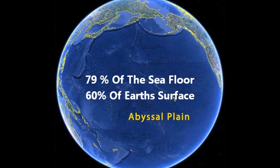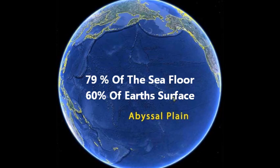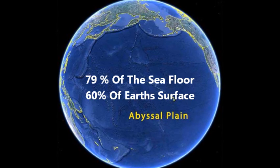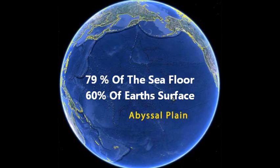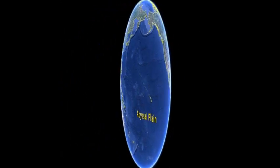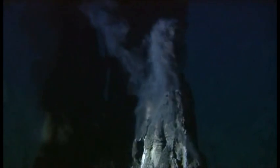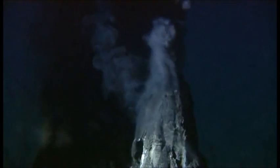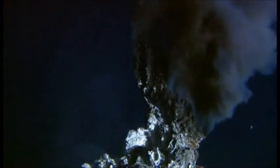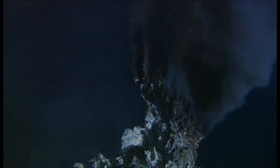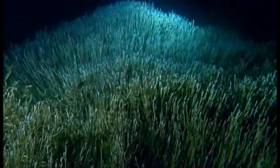It covers about 79% of the sea floor and over 60% of Earth's entire surface. The climate found in the Abyssal Plains is usually dark and cold, with temperatures reaching from negative 4 Celsius to negative 0.5 Celsius, with the water temperature being 464 Celsius by the hydrothermal vents.